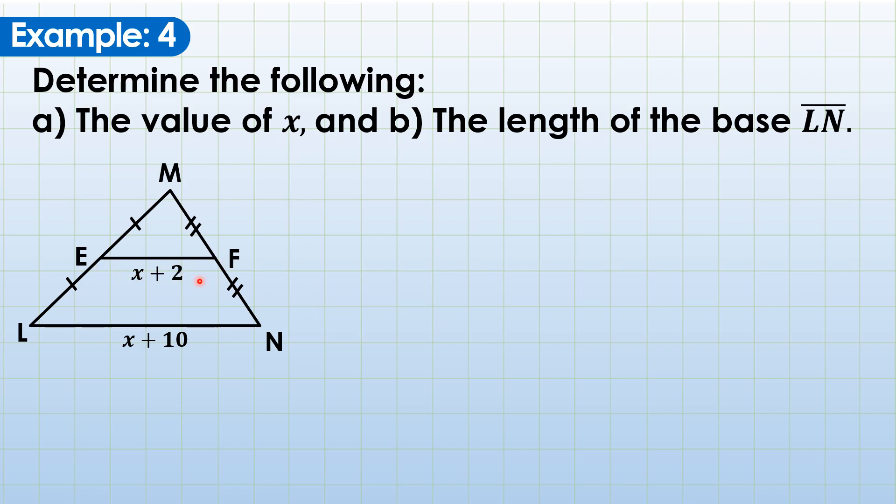EF, the midline, is one half the measure of LN. That is EF equals LN over 2. Substitution, EF is x plus 2. And LN, now, since we cannot divide or simplify the right side of our equation, our next option is to do cross multiplication. You'll have x plus 2 times 2 using distributive property. And then, the denominator of this expression, which is 1, will be multiplied to x plus 10, which gives no effect. So just going to copy it.